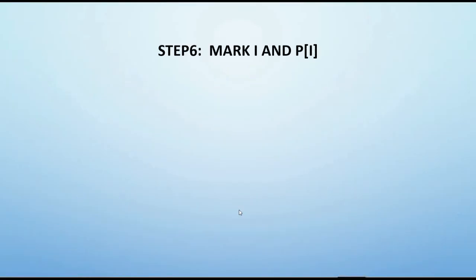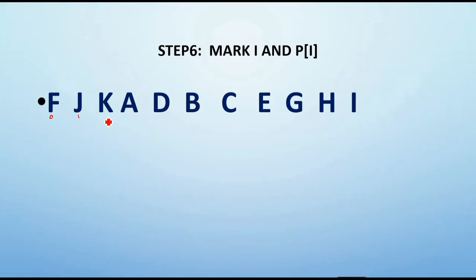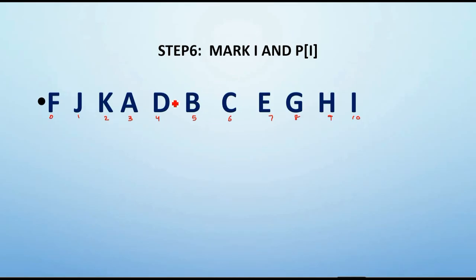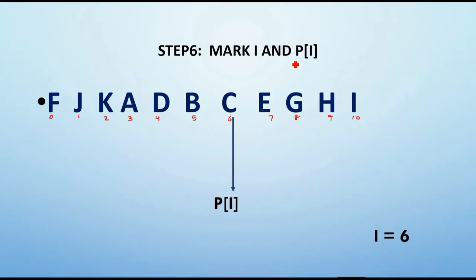In this step, we mark i and P(i) again because P(i) gets updated. Previously P(i) was B, but since we are now considering the new pattern, the sixth position no longer has B but C. So P(i) is now updated to C, and i remains the same — 6. With these two values, we move on to the next step.